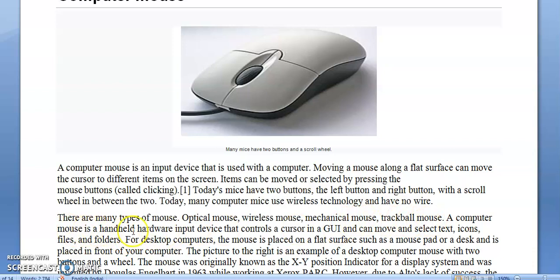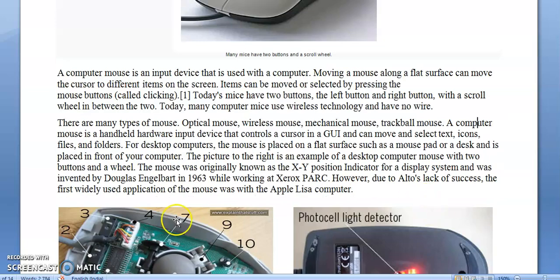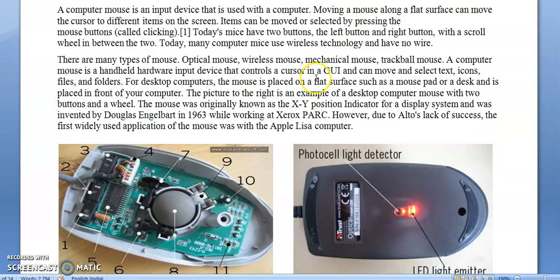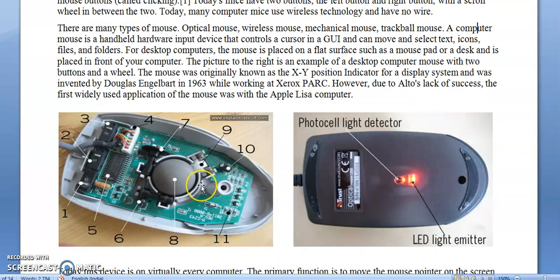A computer mouse is a handheld hardware device that controls the cursor in a GUI and can move and select text, icons, files, and folders. For desktop computers, the mouse is placed on a flat surface such as a mouse pad or a desk, and is placed in front of your computer.